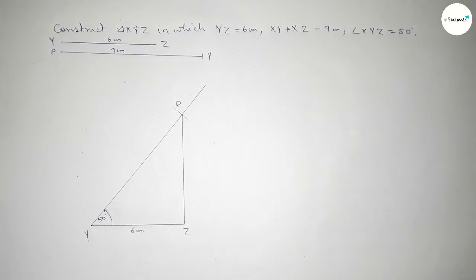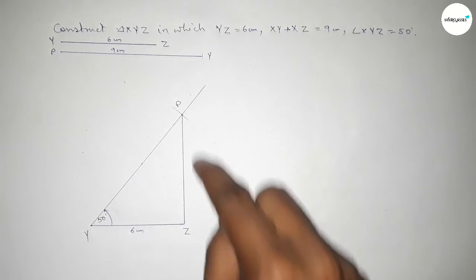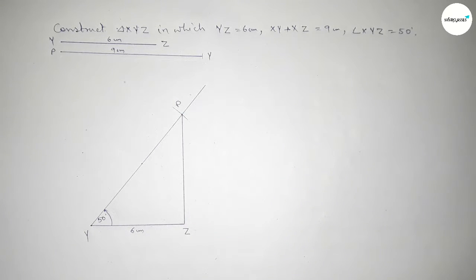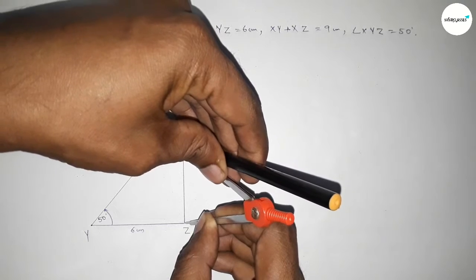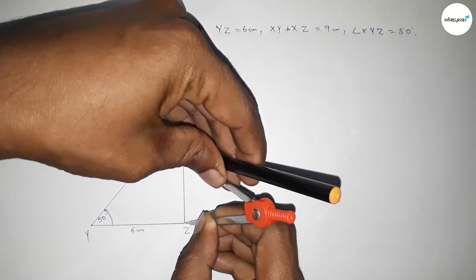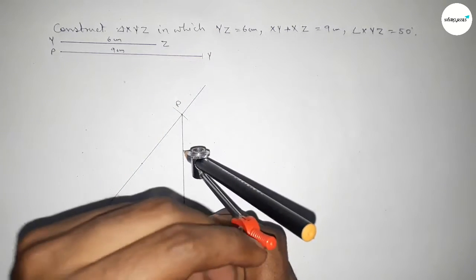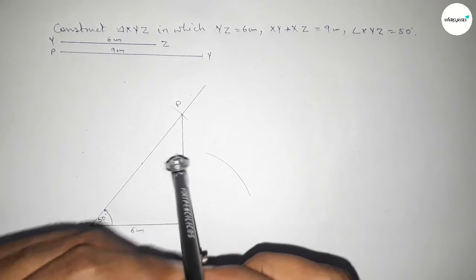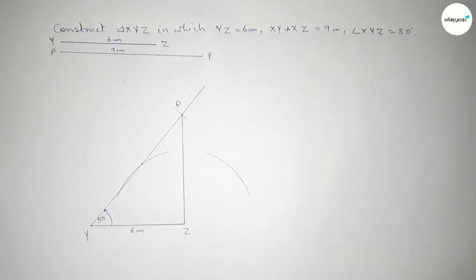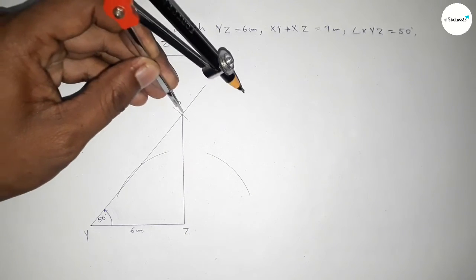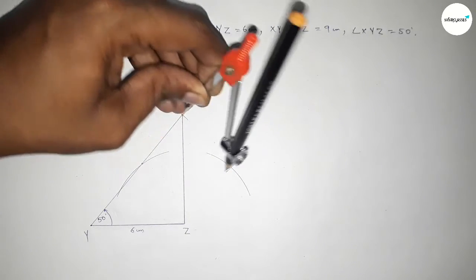Next joining P and Z. Now we have to bisect the line PZ. So putting the compass here and taking greater than half of PZ.